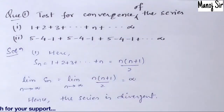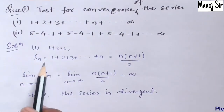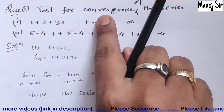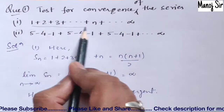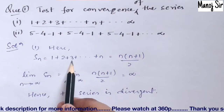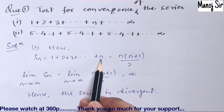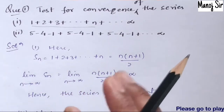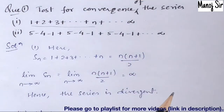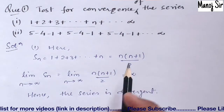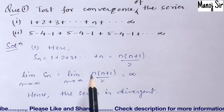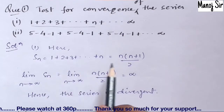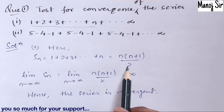Let us solve the first part. We write Sn as the partial sum up to n terms: that is 1 + 2 + 3 + … + n. Since we know that the sum of n natural numbers is n(n+1)/2, we use that formula here.